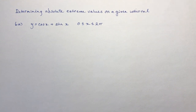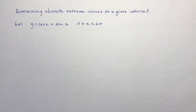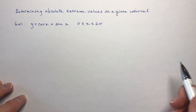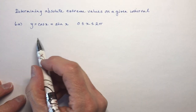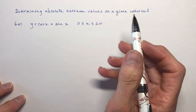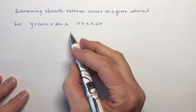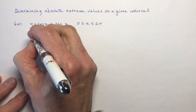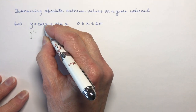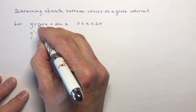I had a request to determine absolute extreme values on a given interval, like the questions on page 257, number six. I'm going to do three of them for you, and hopefully by the time I've done those three you'll have a really good idea on how to do them. If you're trying to find extreme values, remember this is calculus — you need to take the derivative. So the first thing we're going to do is take the derivative of this function.